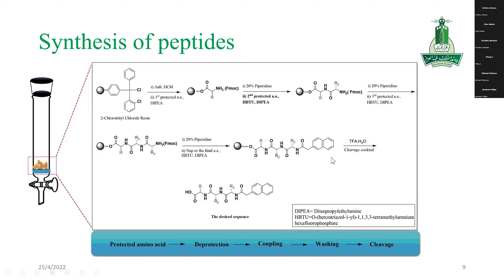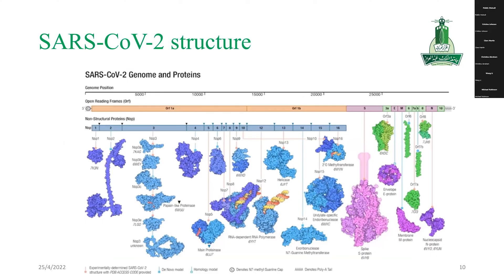After we obtain the desired sequence, we cleave the peptide from the resin using a cleavage cocktail, of which there are many types. To summarize the process: first, use protected amino acid; then deprotect using 20% piperidine; then couple with the next amino acid; then wash; and finally add cleavage cocktail at the end.